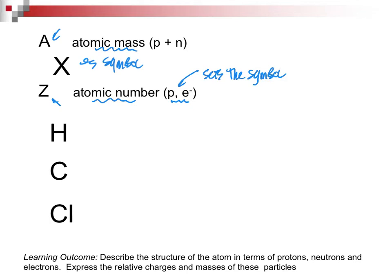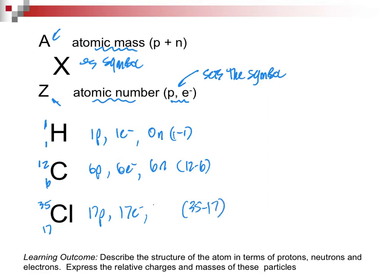Let's do three elements to illustrate this. Hydrogen mass of 1, atomic number 1. Carbon mass of 12, atomic number 6. Chlorine, atomic mass of 35, atomic number 17. For hydrogen, 1 proton, 1 electron, 0 neutrons, 1 minus 1. For carbon, 6 protons, 6 electrons, 12 minus 6, we come up with 6 neutrons. For chlorine, 17 protons, 17 electrons, and we have 35 minus 17, or 18 neutrons. That should be a skill you've brought with you from high school, being able to look at the element symbol and coming up with a number of protons, electrons, and neutrons.